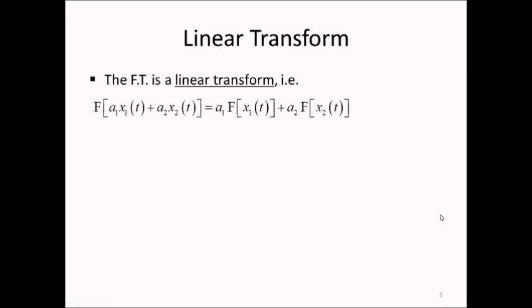The Fourier transform is a linear transform. This means that the Fourier transform of a1·x1(t) plus a2·x2(t), where a1 and a2 are scalar constants and x1 and x2 are time-dependent functions, equals a1 times the Fourier transform of x1 plus a2 times the Fourier transform of x2.